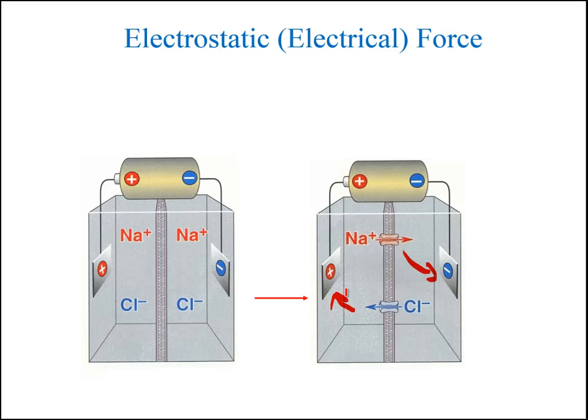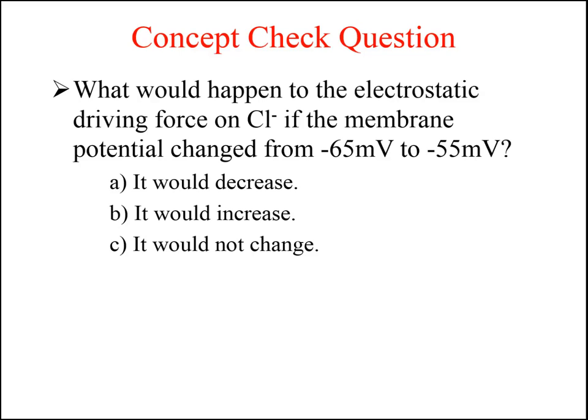In cells, the basis for the electrical charge is the membrane potential. Concept check question: What would happen to the electrostatic driving force on chloride if the membrane potential changed from minus 65 millivolts to minus 55 millivolts? Would it decrease, increase, or not change?